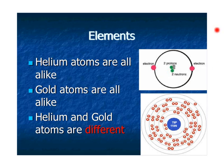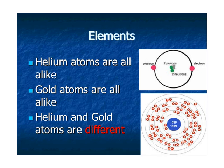But helium and gold atoms are different. What do you see is different between this atom and this atom? If you said that they had different numbers of protons, neutrons, and electrons, you would be correct. A gold atom is always going to have 79 protons, 118 neutrons, and 79 electrons. A helium atom is always going to have two protons, two neutrons, and two electrons.